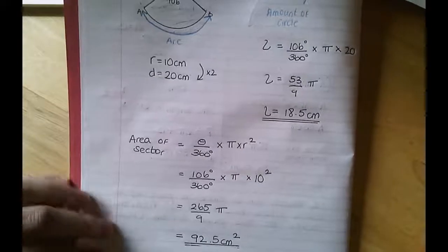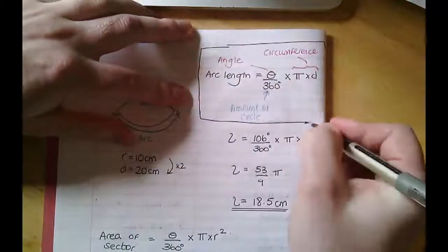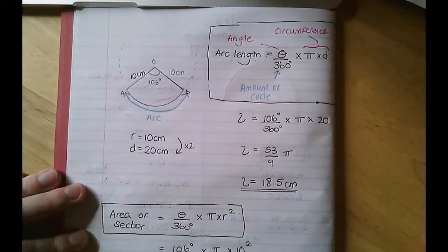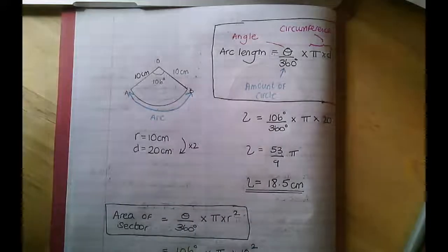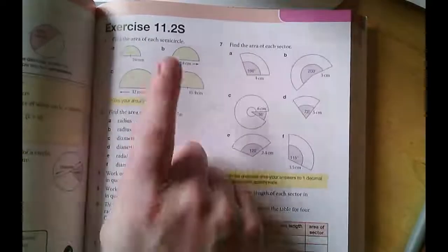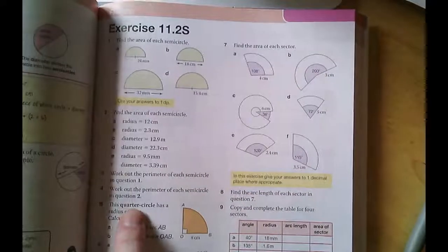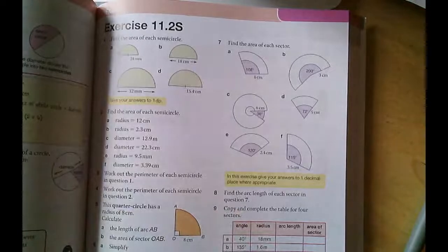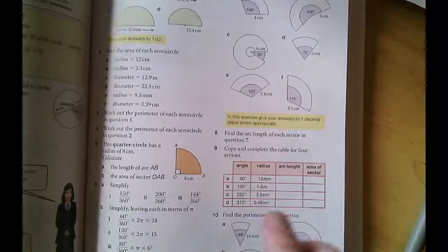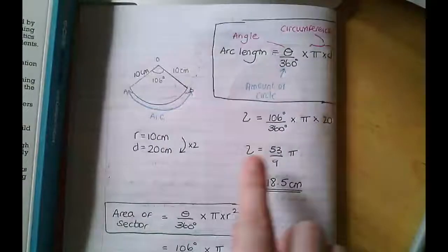For sectors there are two key formulas you need to know: the arc length formula and the area of a sector formula. Please make sure those are written down. Now you should be able to have a go at 11.2s. For questions 1 to 4 look at the semicircle section first; there's also a quarter circle question to get you thinking about what part of the circle you want, and questions on finding arc length, area of a sector, and perimeter.